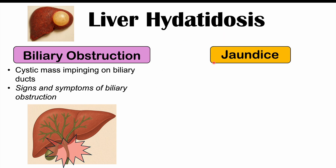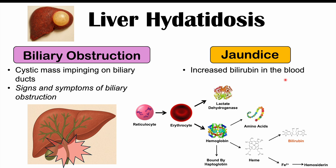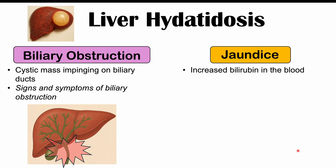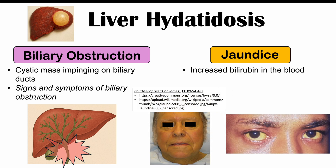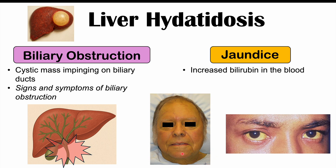Jaundice, or yellowing of the skin and whites of the eyes, is due to increased bilirubin in the blood. Bilirubin comes from the breakdown of red blood cells: a red blood cell breaks down into hemoglobin, which breaks down into heme, which then breaks down into bilirubin. Bilirubin is yellowish colored and binds to elastin in the whites of the eyes and in the skin, causing jaundice. When it affects the whites of the eyes, we call it scleroicterus.